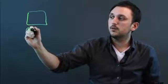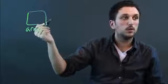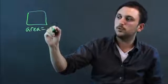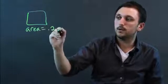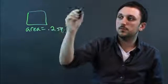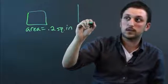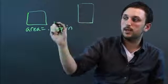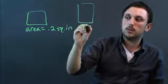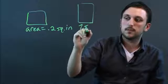So, let's say we have a square with an area of 0.2 square inches. And then we have another square, not drawn to scale, that has an area of 7.8 square inches.